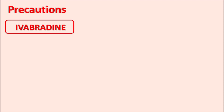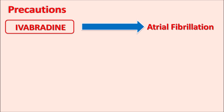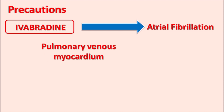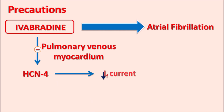Another important precaution is that Ivabradine can increase the risk of atrial fibrillation. At the pulmonary venous myocardium, particularly HCN4 channels are important. Ivabradine blocks these HCN4 ion channels, reducing the IF current, which may stimulate other pathways resulting in increased atrial fibrillation. So Ivabradine can precipitate atrial fibrillation. If any symptoms of atrial fibrillation are observed, Ivabradine should be stopped to avoid sudden cardiac arrest.